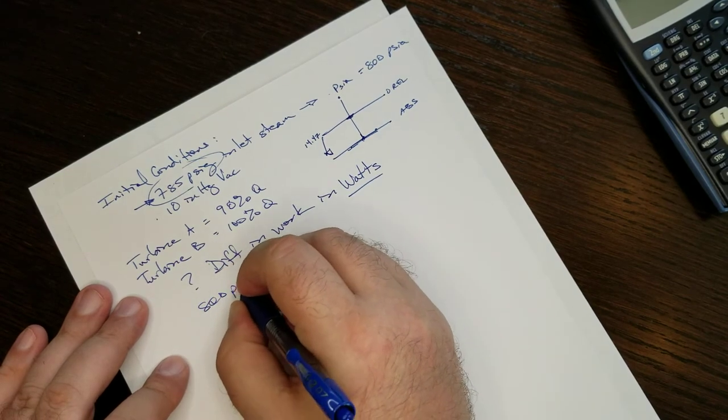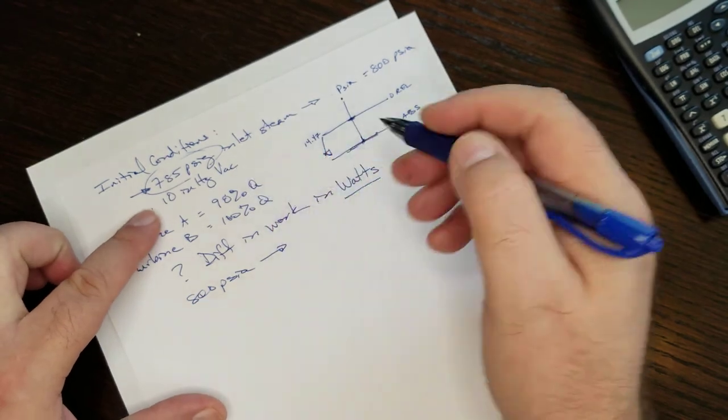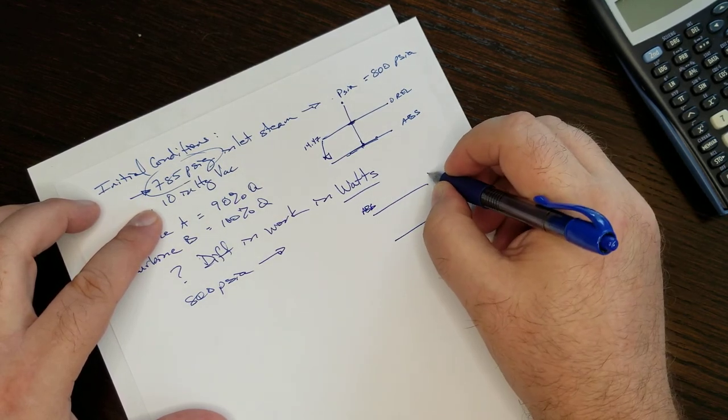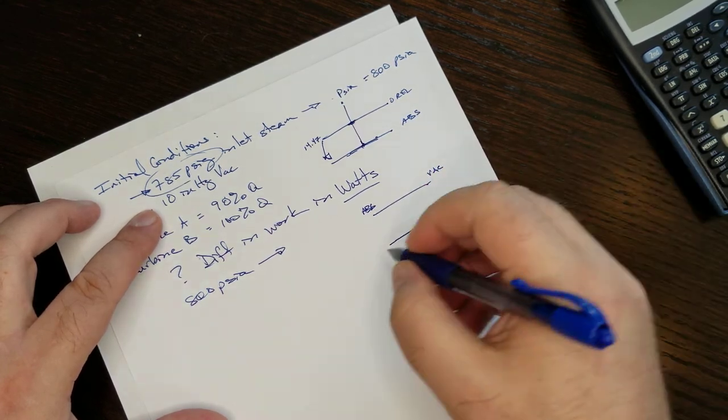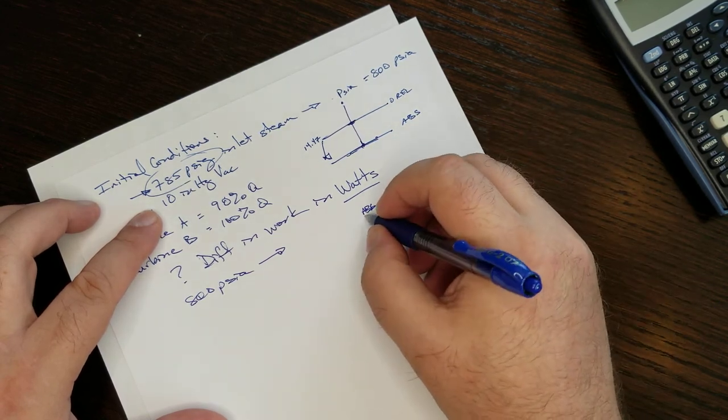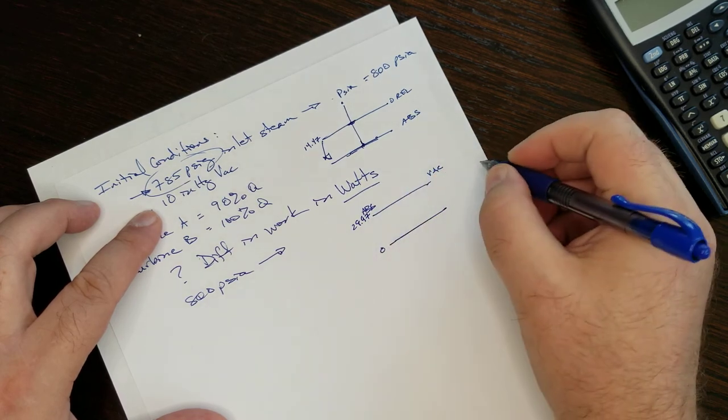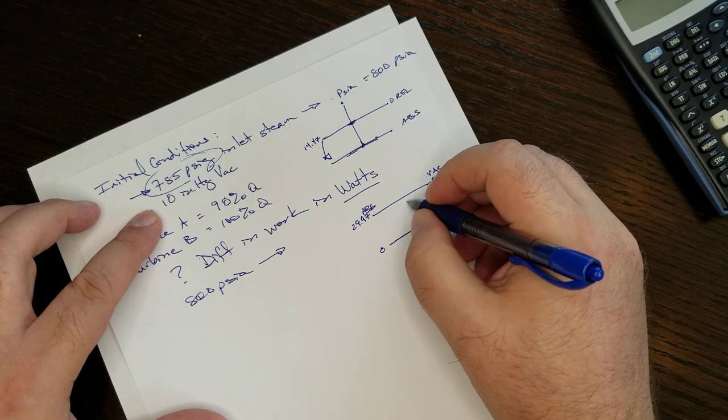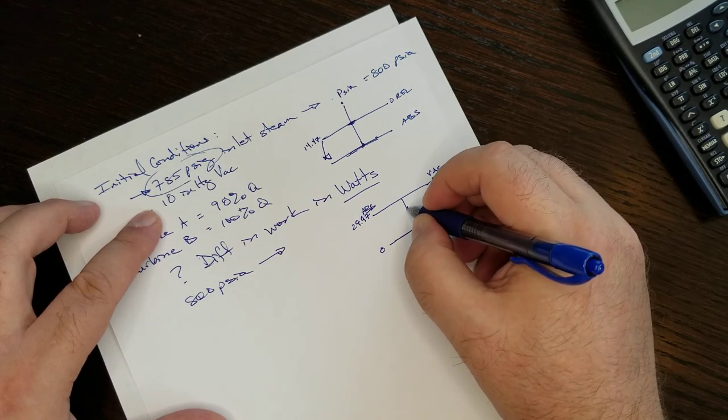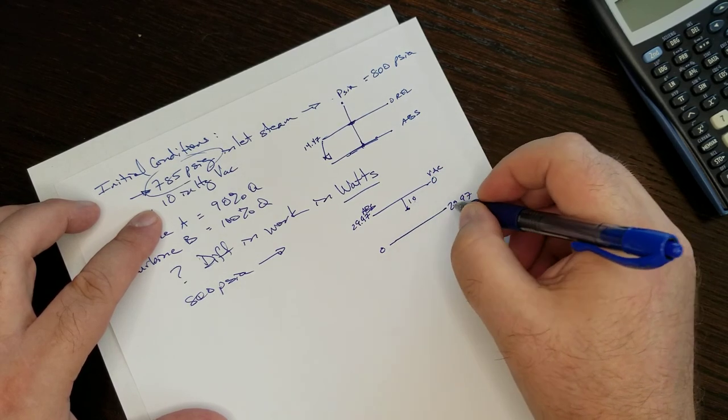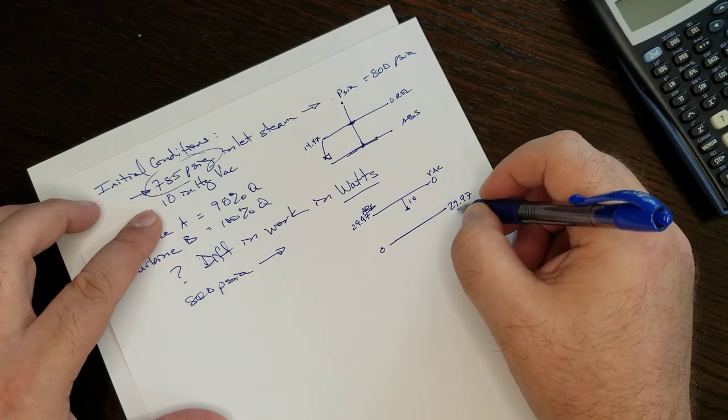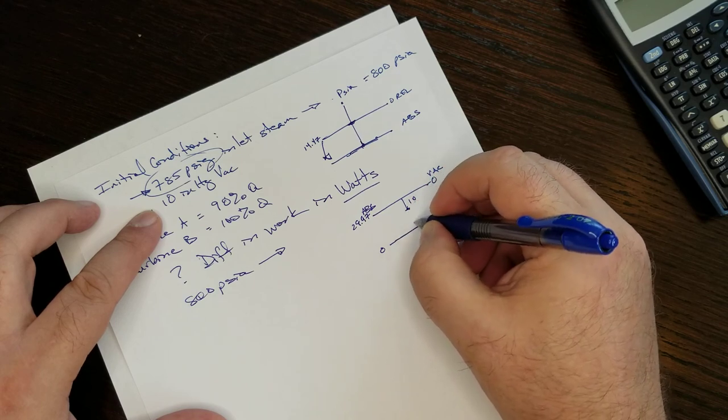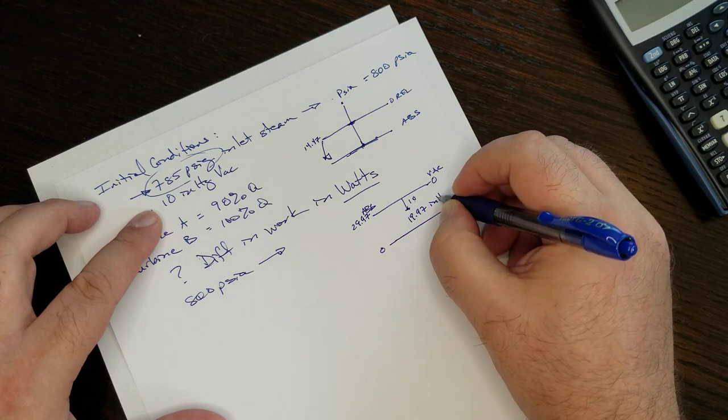So our initial condition is 800 PSIA, and it's going to a condenser that's at 10 inches mercury vacuum. So once again, let's redraw this. On an absolute scale, this is perfect zero, and this is 29.97 inches of mercury. On a vacuum scale, this is zero, and this is 29.97 inches of mercury. So because we know we are somewhere in here, 10 inches of mercury vacuum, we know we're above our relative zero by 19.97, because that's what's left, 29.97 minus 10. So the difference here is 19.97 inches mercury absolute.